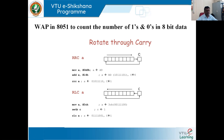For writing the program to count the number of ones and zeros, you can use either RRC or RLC instruction. The logic is: since we have an eight-bit data byte, we rotate the data eight times. Every time we check whether the rotated bit is one or zero — if it is one, increment the counter for ones; if it is zero, increment the counter for zeros. At the end we get both counts.